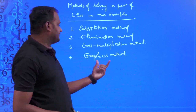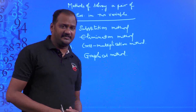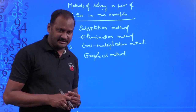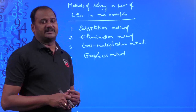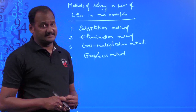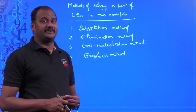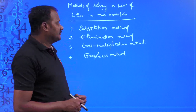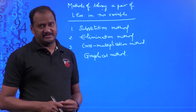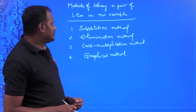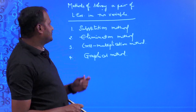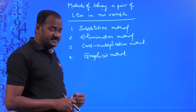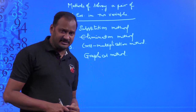We had a discussion about the graphical method. When you represent two straight lines on the graph sheet, where both the straight lines intersect, that point of intersection is said to be the common solution for both the given linear equations in two variables. Now we will be discussing about the substitution method, elimination method, and cross-multiplication method.